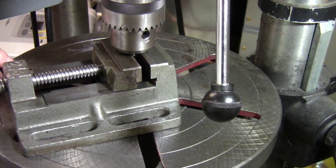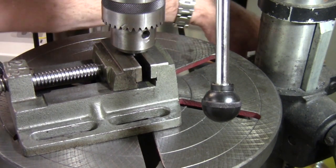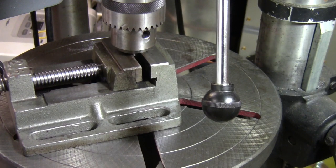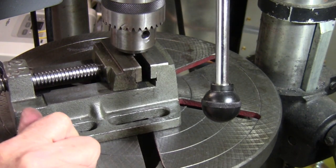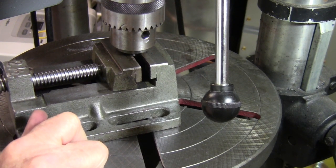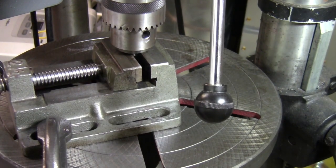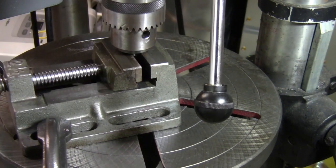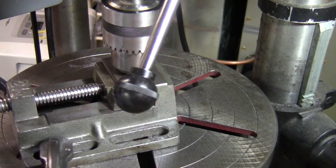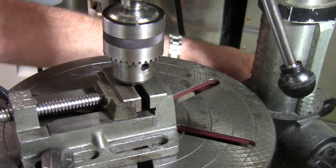I'm going to c-clamp the vise down to the table. Make sure your table is locked down. Clamp the vise in place. Unlock the quill and I actually need to lower it. I'll just leave it on there and lower it so I can get a drill bit in there. I'm going to lock my table back down.